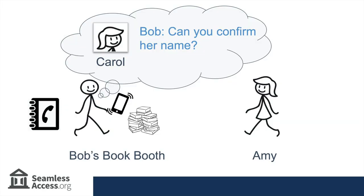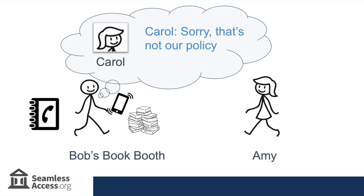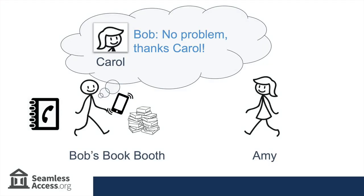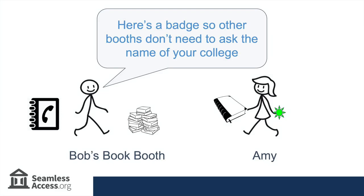Now, Bob would ideally like to know the student's name so that he can learn more about her interests and recommend other books to her in future. However, ABC College's policy is not to release student names, and so Carol can't provide Bob with any additional information on the student. Bob has now verified that the student in front of him is at ABC College. Bob gives Amy her book and also gives her a bright green badge to wear that says, "I'm with ABC College."